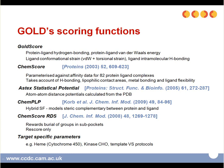ChemScore was derived empirically from a set of 82 protein-ligand complexes for which measured binding affinities were available. Unlike GoldScore, the ChemScore function was trained by regression using measured affinity data, although there is no clear indication that it is superior to GoldScore in predicting affinities.